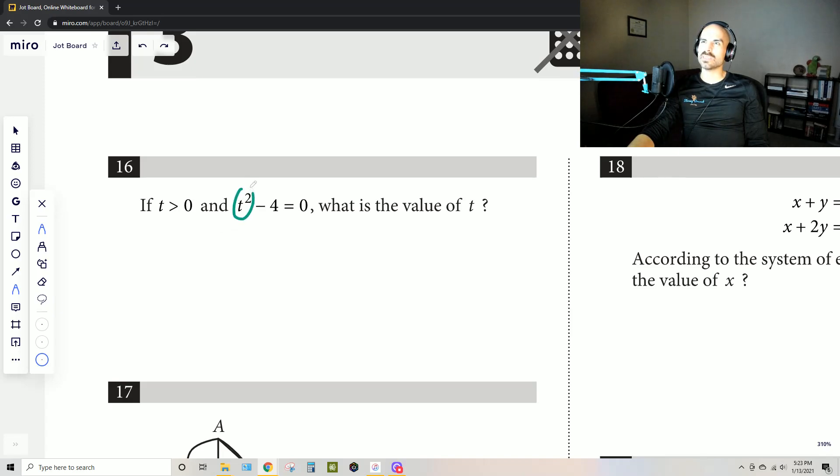So t squared minus 4 equals 0. What's the value of t? Well, what minus 4 would give me 0? Well, this would ultimately have to equal 4.